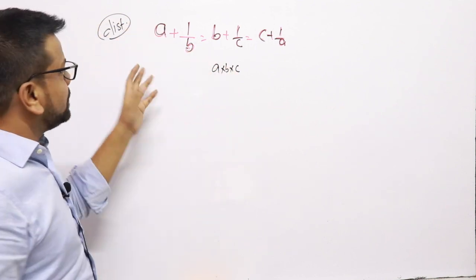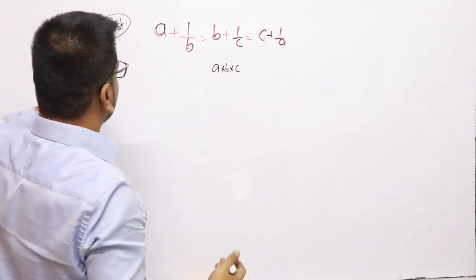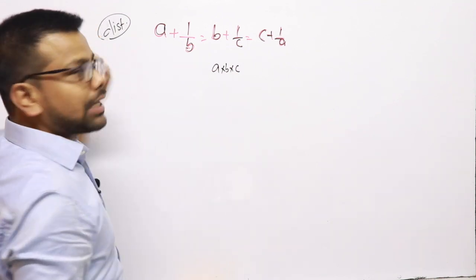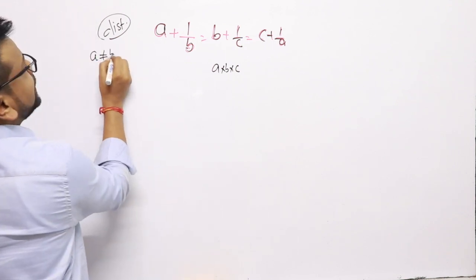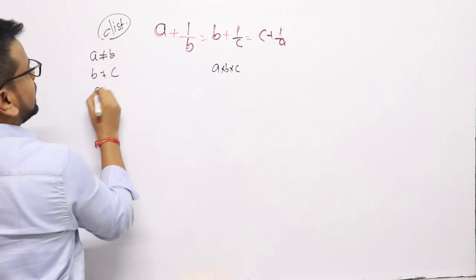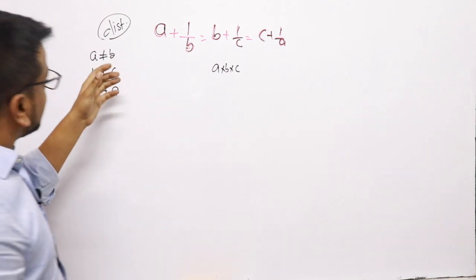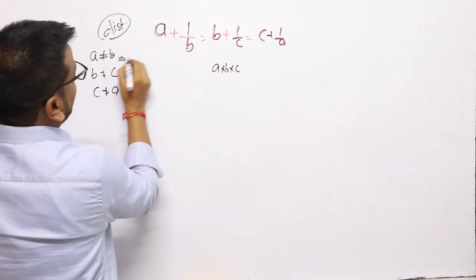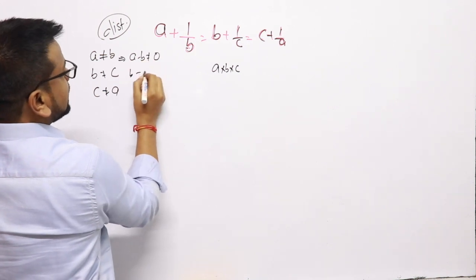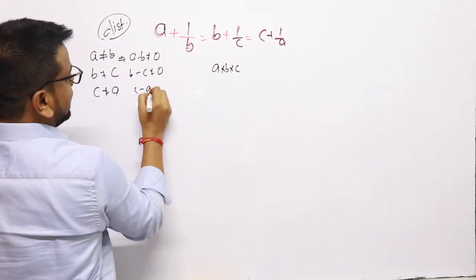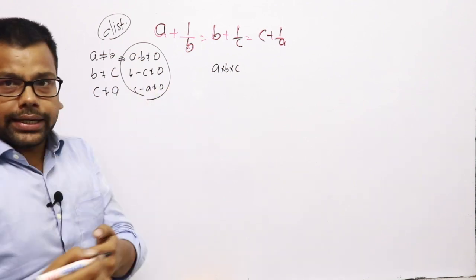The keyword here is 'positive distinct' — a, b, c are distinct. This means a−b is not equal to 0, b−c is not equal to 0, and c−a is not equal to 0.